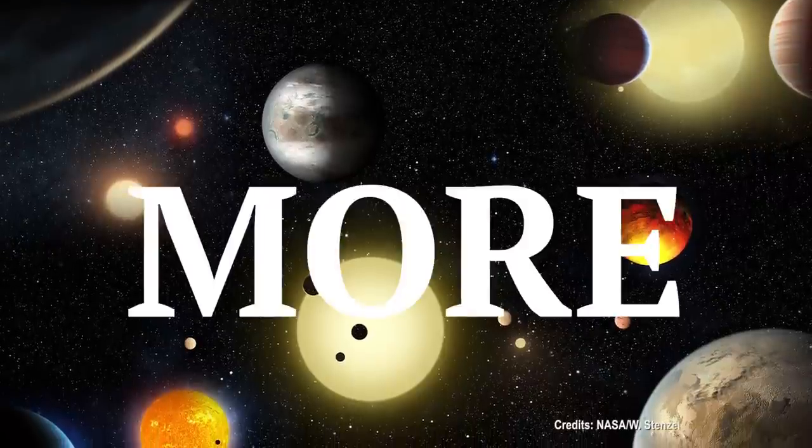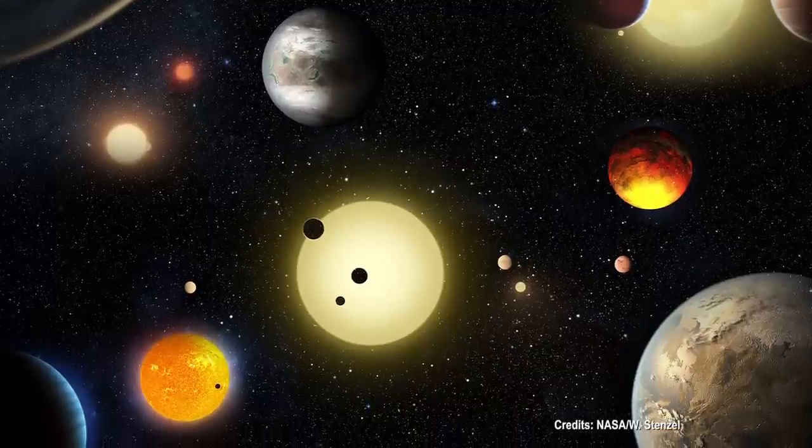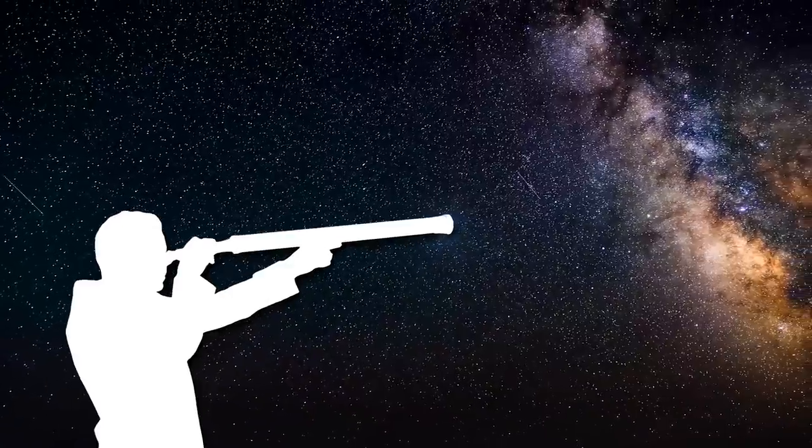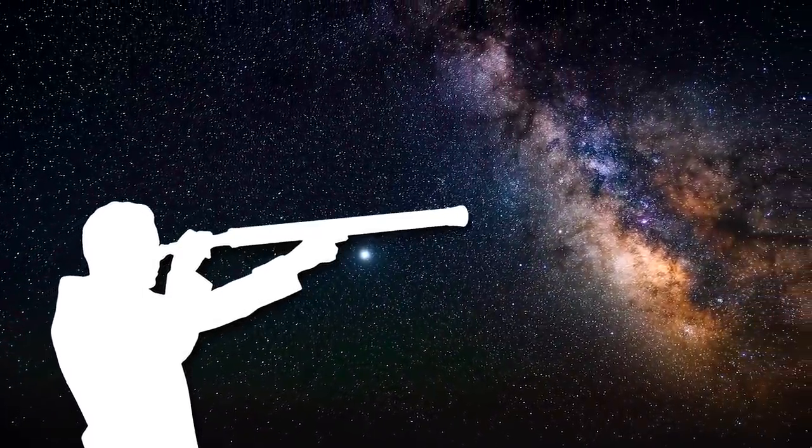To date, astronomers have discovered more than 3200 other stars with planets orbiting them. And this is only speaking of our galaxy. There are likely to be many more planetary systems out there waiting to be discovered, both in the Milky Way and beyond.